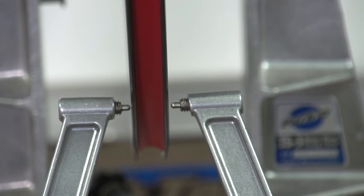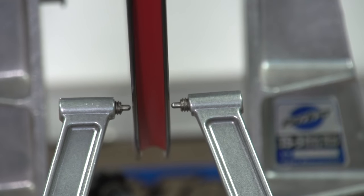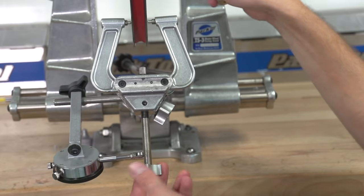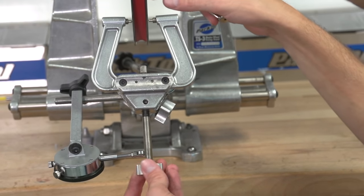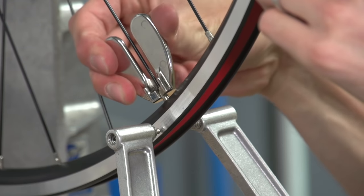Put the wheel into the truing stand. Spin it gently and find a point where the rim is touching one side of the dishing fingers or brake pad, and then tighten a spoke which attaches to the hub on the opposite side.